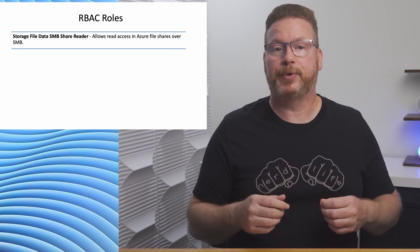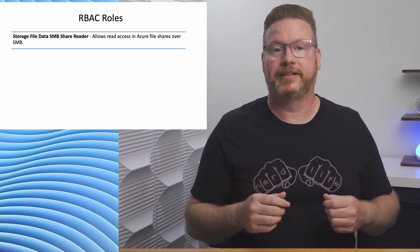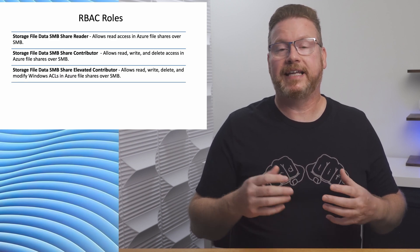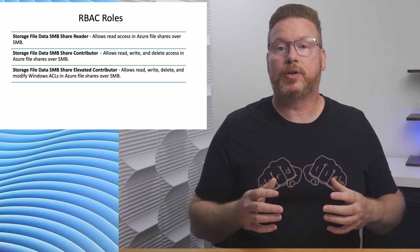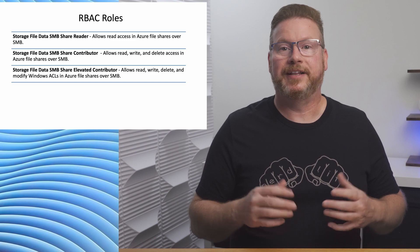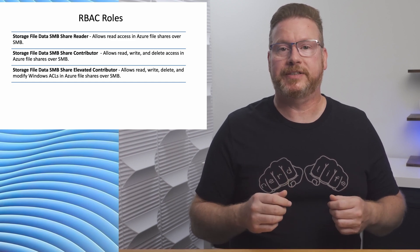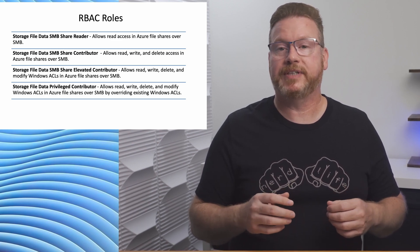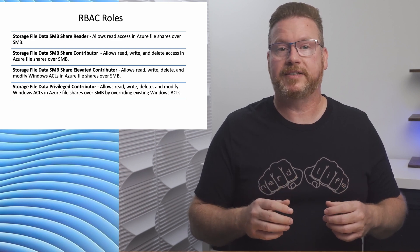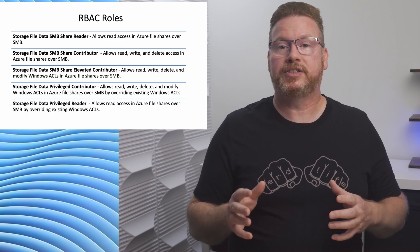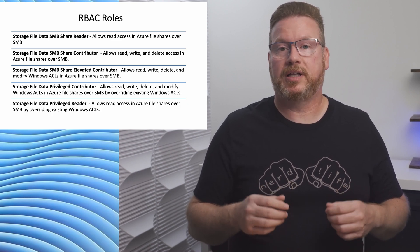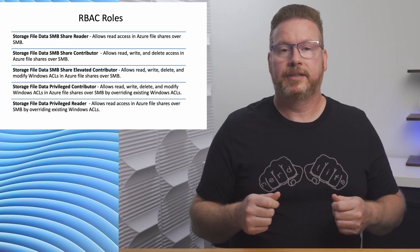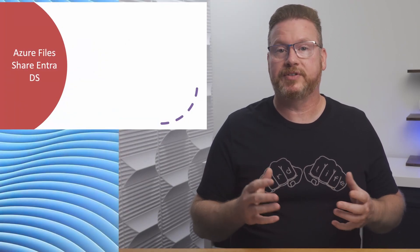We have three share-level permissions available. The first is Storage File Data SMB Share Reader — this role can read data in the share. Then SMB Share Contributor — this role can read and write data on the share. Finally, SMB Share Elevated Contributor — this role can read, write, and modify permissions on the share. There are also two additional roles that override Windows permissions: Storage File Data Privileged Contributor, which allows reads, writes, deletes, and modifies Windows ACLs; and Storage File Data Privileged Reader, which allows read access overriding existing Windows ACLs.